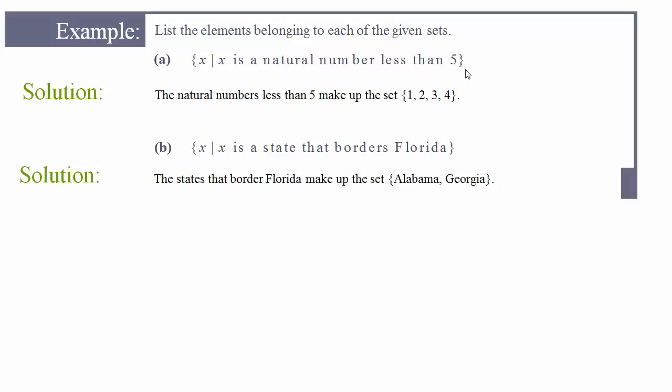We know that natural numbers less than 5 are 1, 2, 3, and 4. If you didn't know what a natural number is, a natural number are what sometimes are referred to as the counting numbers. They are the positive integers. You don't have fractions, you don't have negatives, you don't have 0.